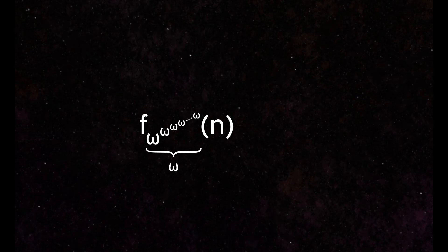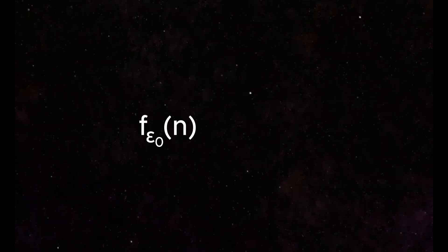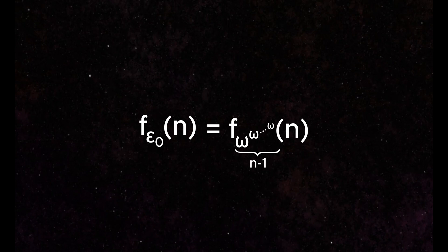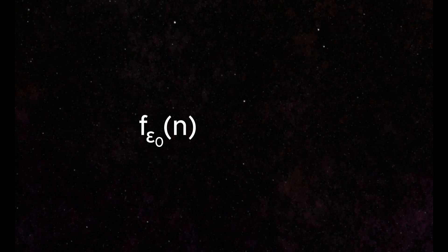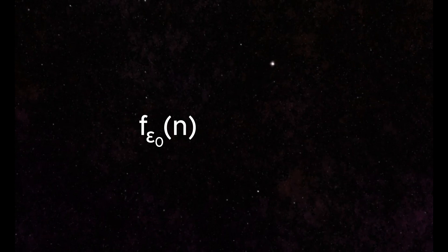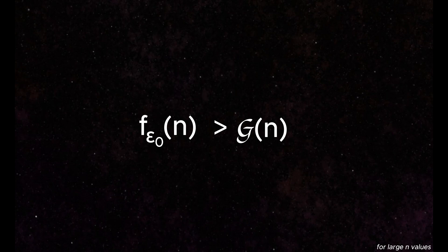This new sequence will require a new symbol, epsilon naught, or epsilon null. f_epsilon null grows exceptionally fast, with each progressive number requiring the evaluation of power towers of omegas. This function explodes extraordinarily rapidly, with even the notation required to evaluate low values becoming unwieldy and abstract. But finally, we have a function that can surpass the Goodstein function.